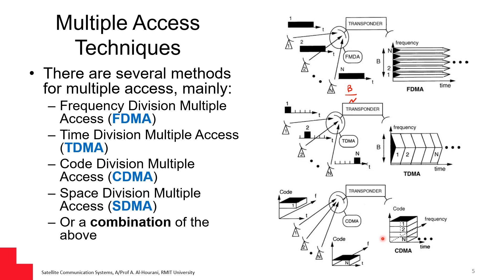A fourth method is called space division multiple access, where the satellite would have different spots, and the satellite can assign the same frequency — for example, frequency F1 — to different spots, because these spots do not cause mutual interference to each other.